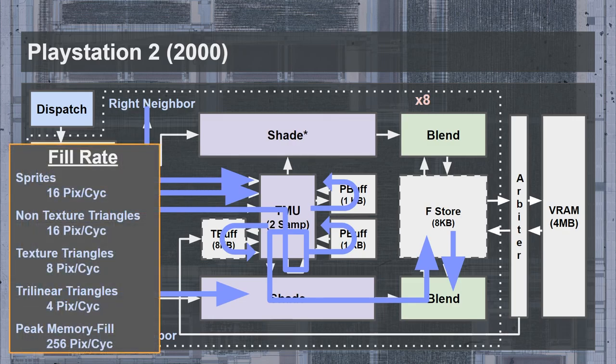To summarize: sprites and non-textured triangles can be drawn at 16 pixels per cycle; textured triangles can be drawn at 8 pixels per cycle. The memory fill rate from the video memory is supposedly sufficient for 256 pixels per cycle based on peak frame store refill bandwidth, though the frame store itself is only capable of handling 64 pixels per cycle — enough to do 32-bit color and depth for all 16 pipelines. These fill rates apply to 32-bit rendering mode.